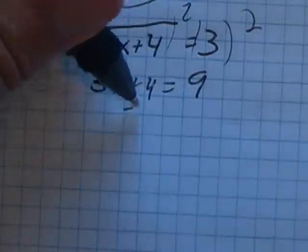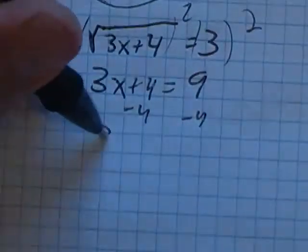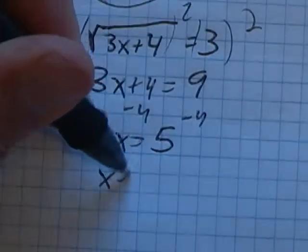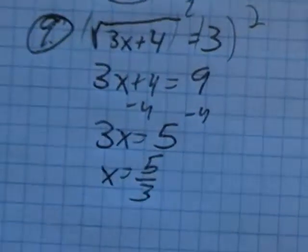So then from here, subtract 4 from both sides. 9 minus 4 is 5. Divide by 3, x is 5/3.